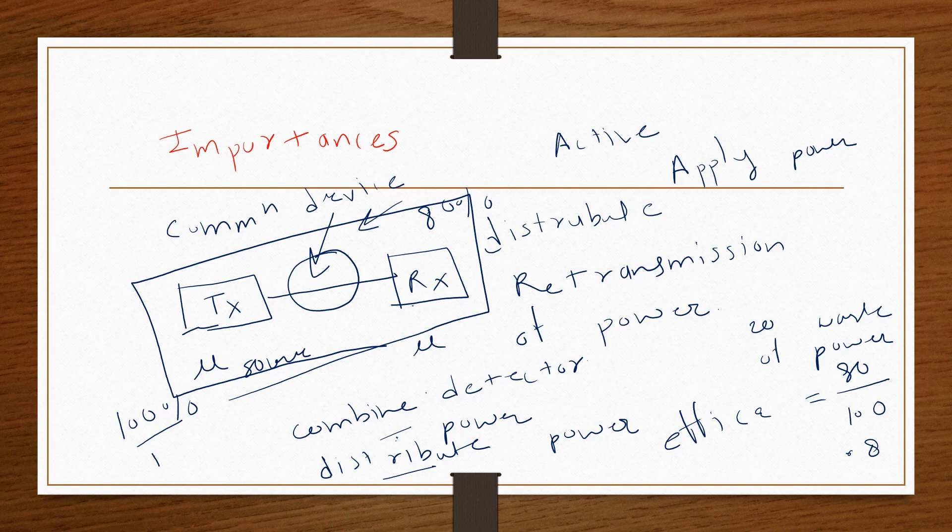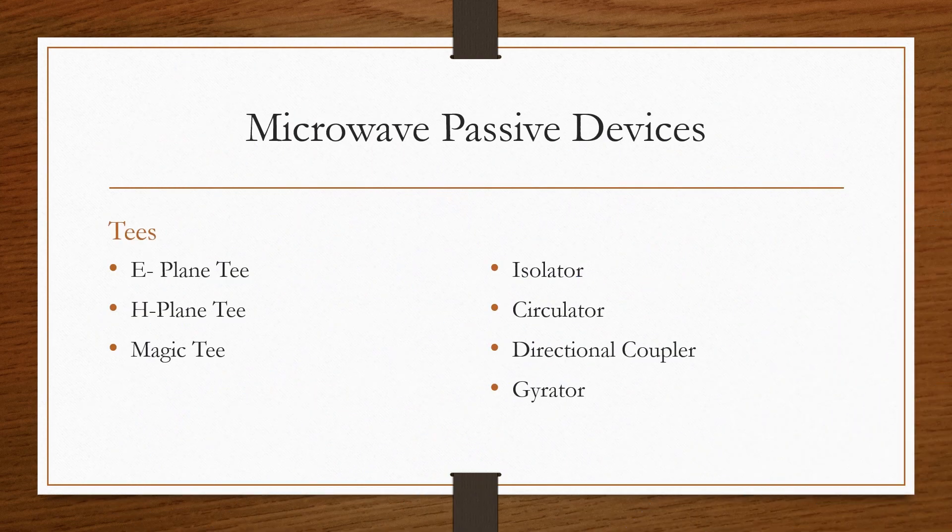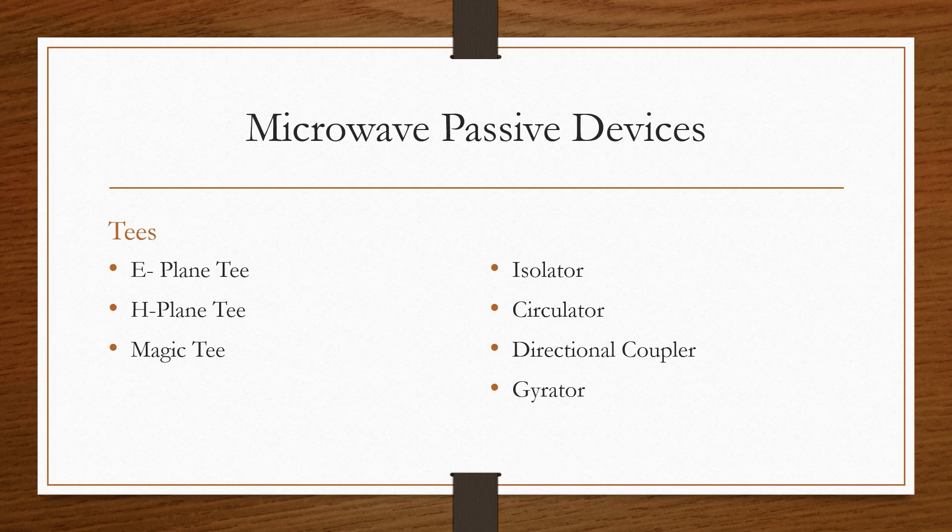Now the main question is which passive devices are available for Microwave communication system? The list is E-Plane T, H-Plane T, Magic T, Isolator, Circulator, Directional Coupler, and Gyrator.